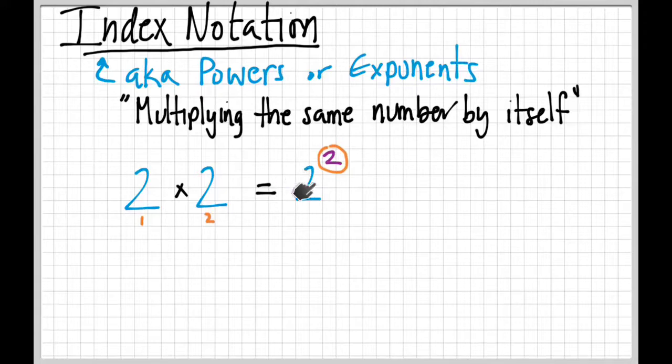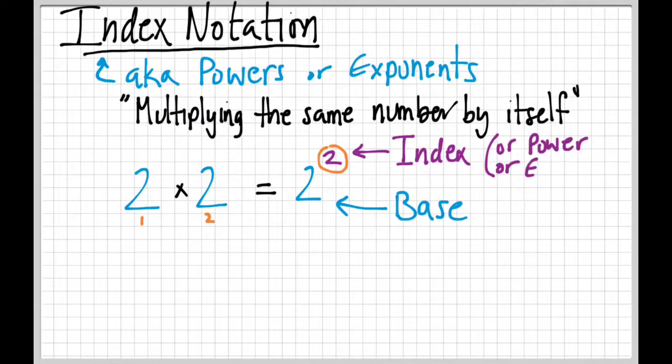The big number at the bottom is called the base, and the little number up and to the right is called the index, or of course, the power or exponent.